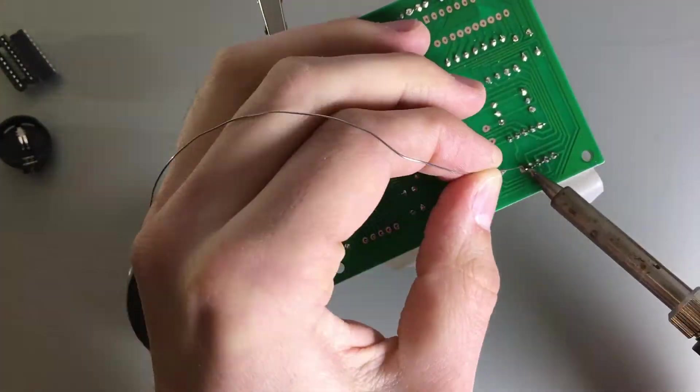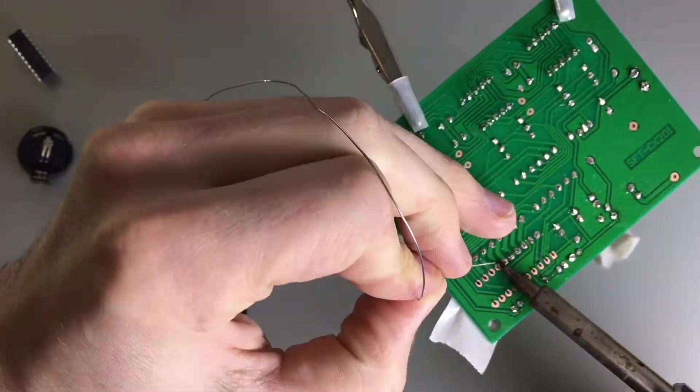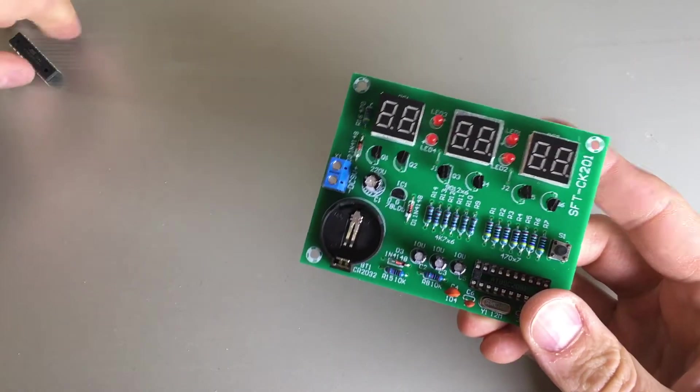Again, I'm using the tiniest solder diameter with integrated flux for clean solder joints. Insert the IC in the bed. It has a notch on one side that must face to the left in this case.